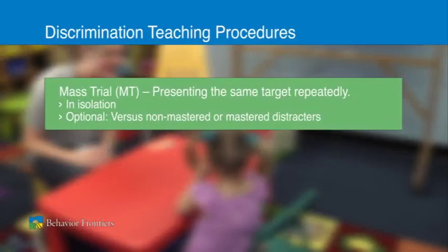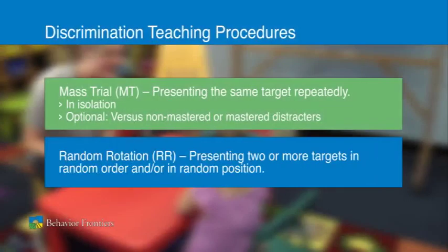The other discrimination procedure is called random rotation, which is presenting two or more targets in random order and or in random position.